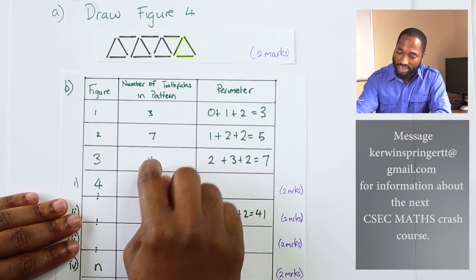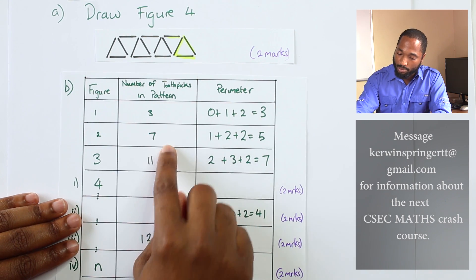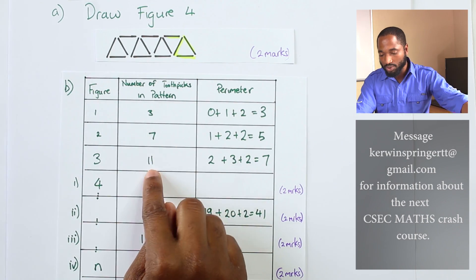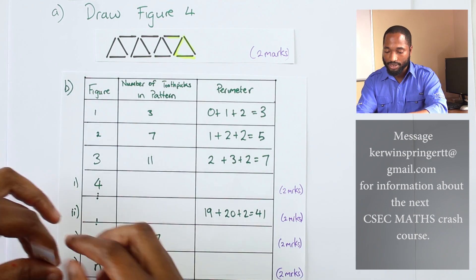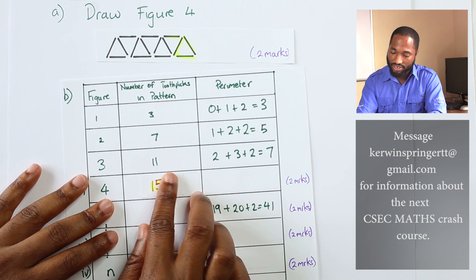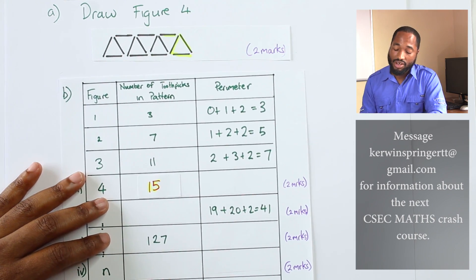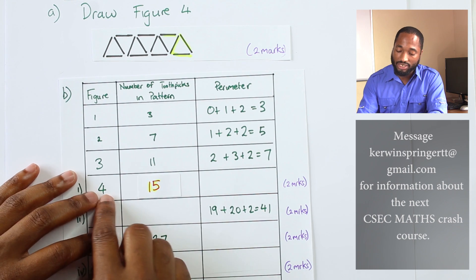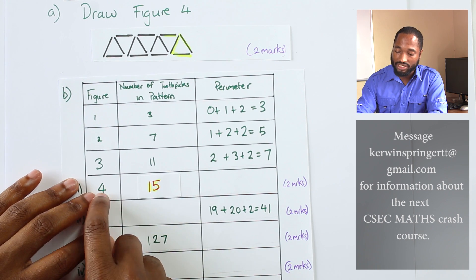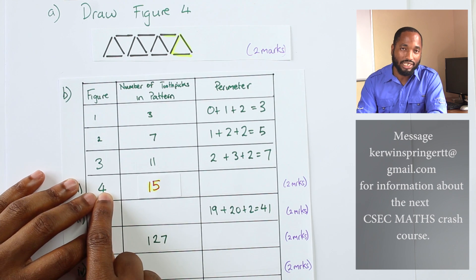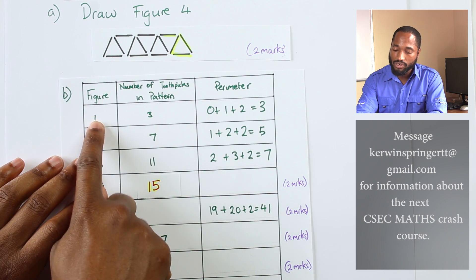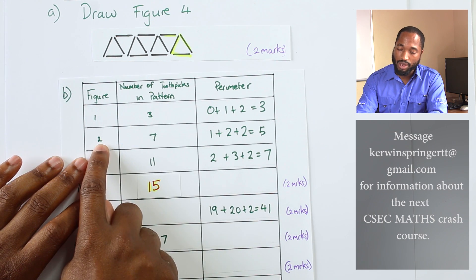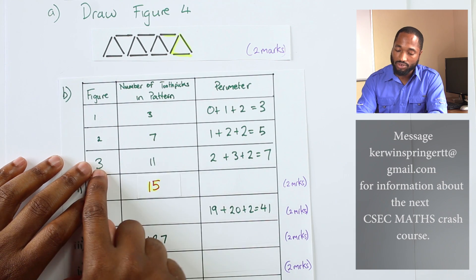Number of toothpicks in pattern: 3, 7, 11. This is separated by four each time to the next one. For four it's going to be 15. 11 plus 4 is 15, that's the pattern there, right? Or the better way to do this is recognize it connected to this number. It's multiplied by four, take away one. One by four take away one is three. Two by four is eight, take away one is seven. Three by four take away one is 11, and so on.